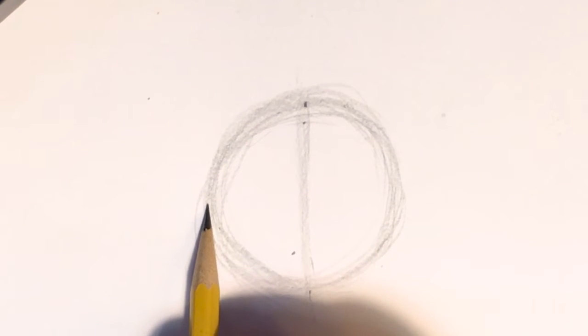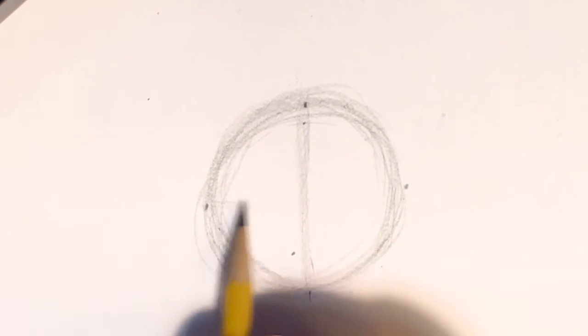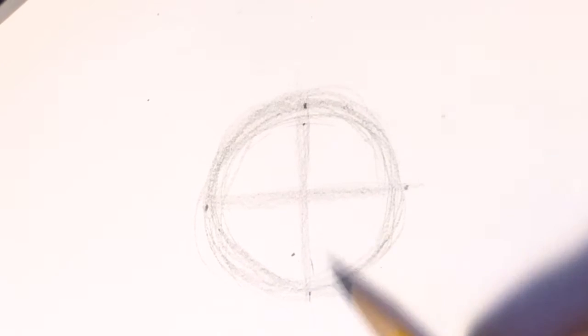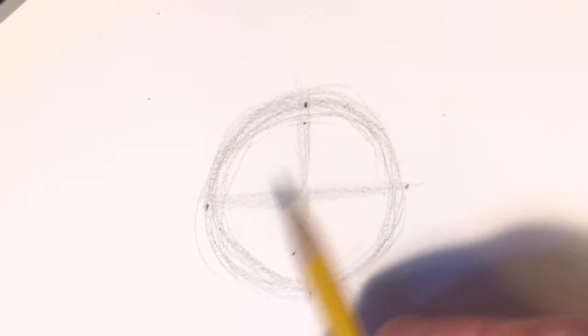I'm also gonna go right to left with another guideline. This one goes right to left. Basically, we're just putting a plus sign on here. What this really does is it shows us where the center of the shape is. That'll make it easier to get his features in the right spot. Plus, we know I have four smaller spaces to work with instead of one big one.